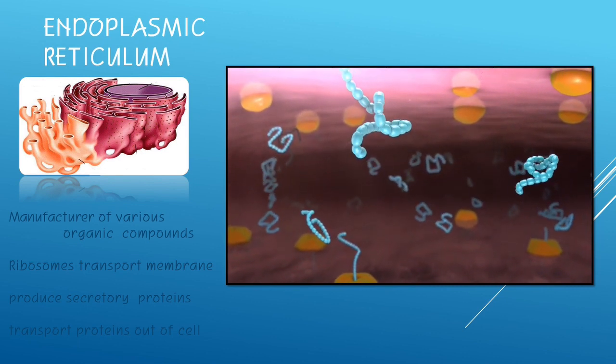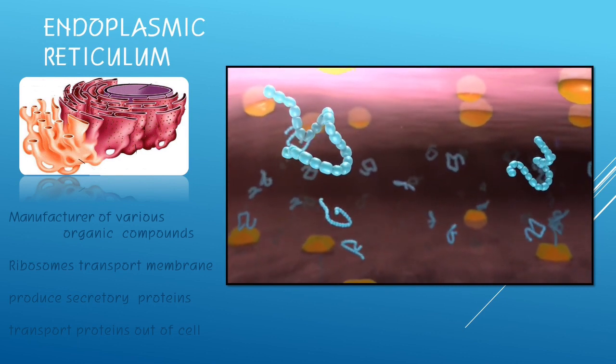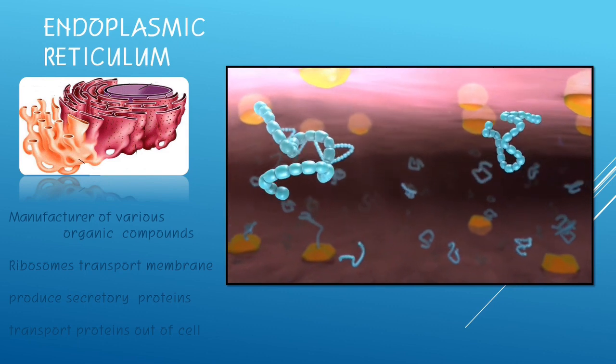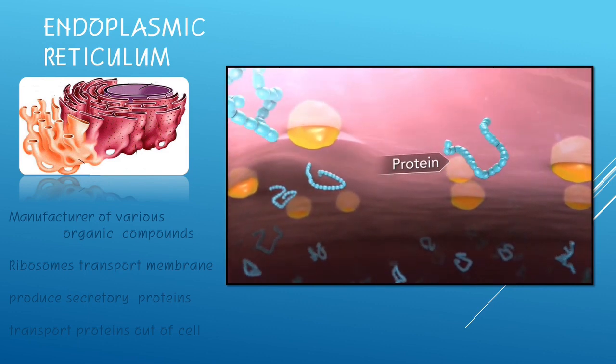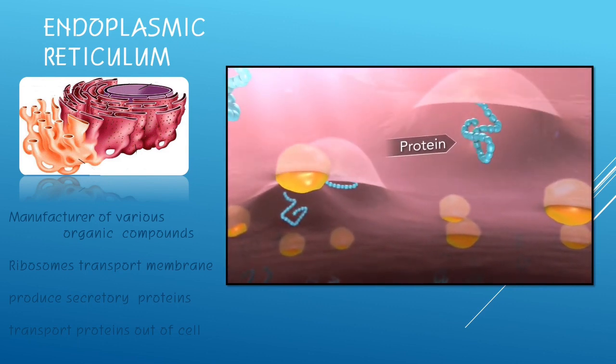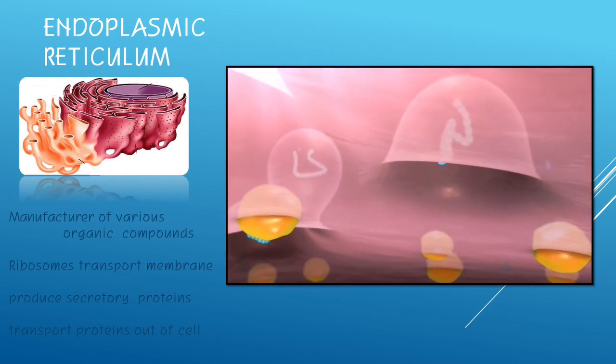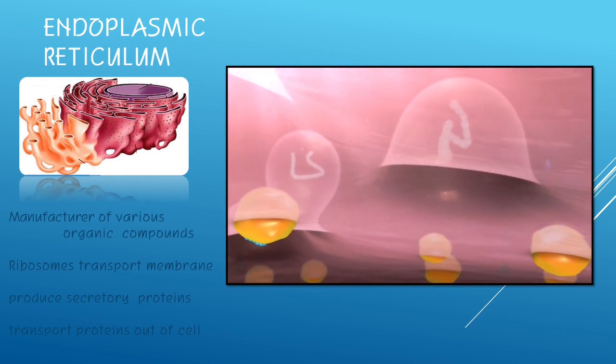One is a rough endoplasmic reticulum that is with a ribosome, and the other is a smooth endoplasmic reticulum without a ribosome. And the endoplasmic reticulum is an enclosed membrane structure which serves as a passageway for transporting materials such as proteins synthesized by the ribosomes.